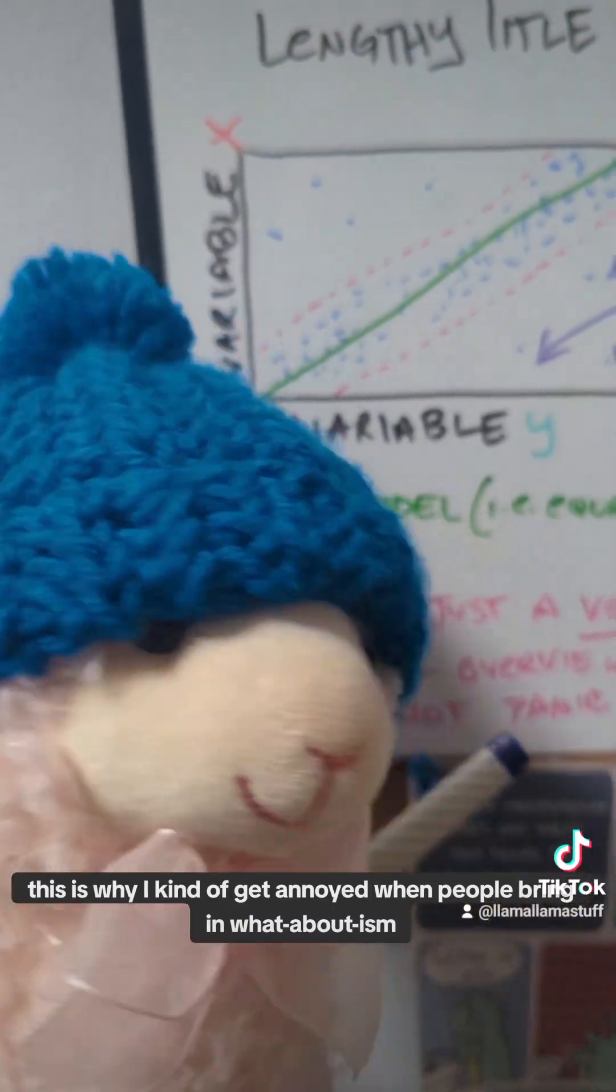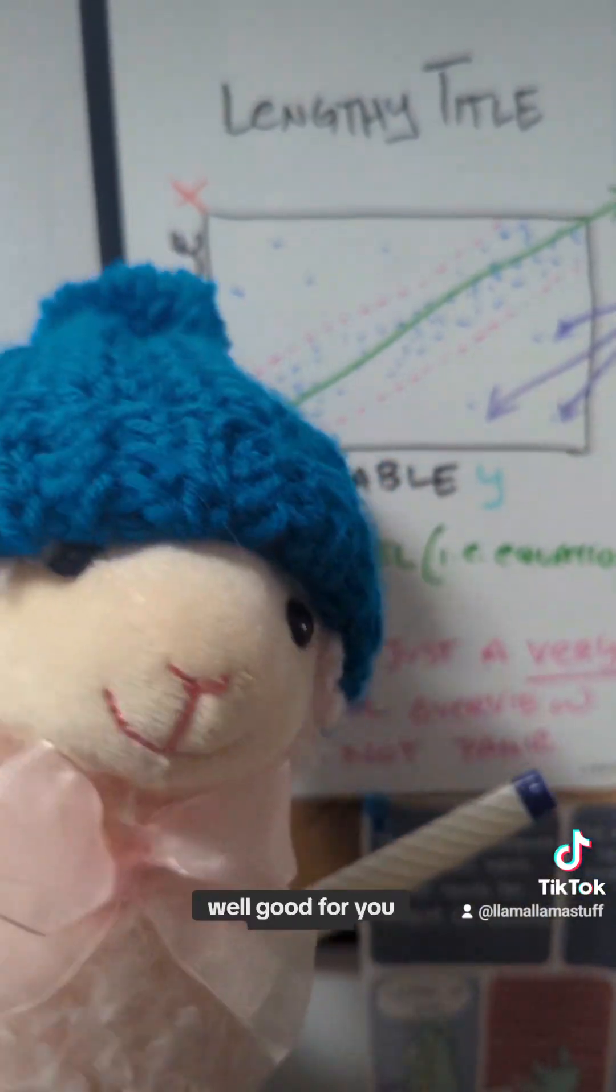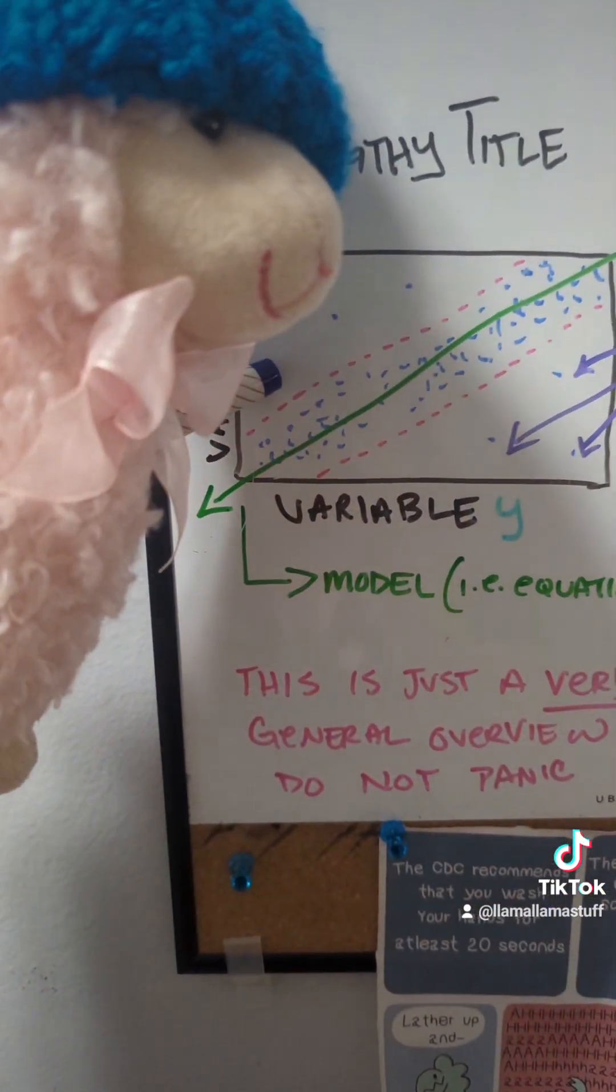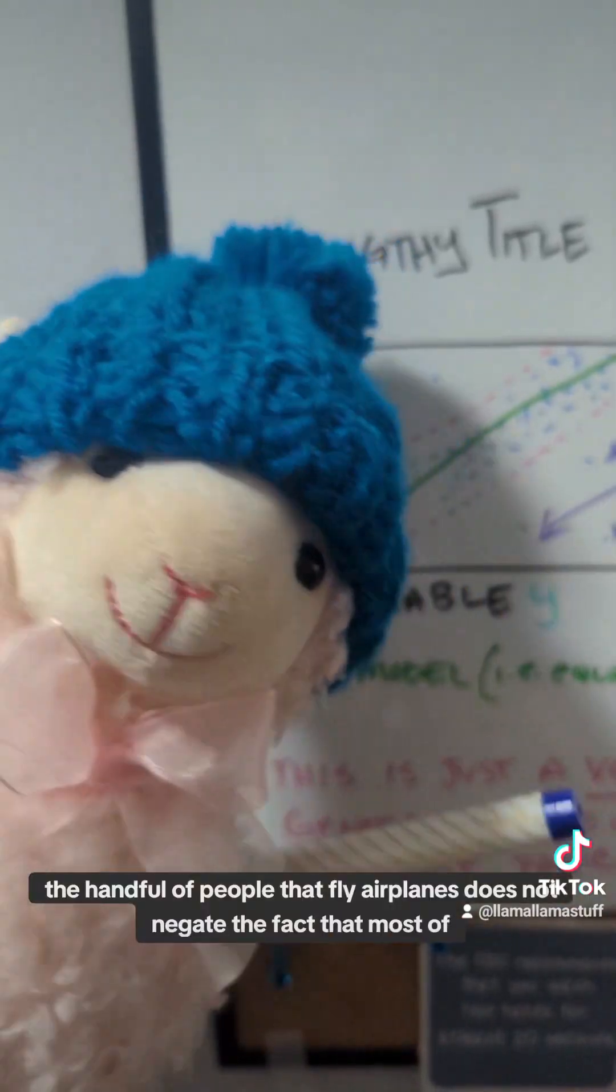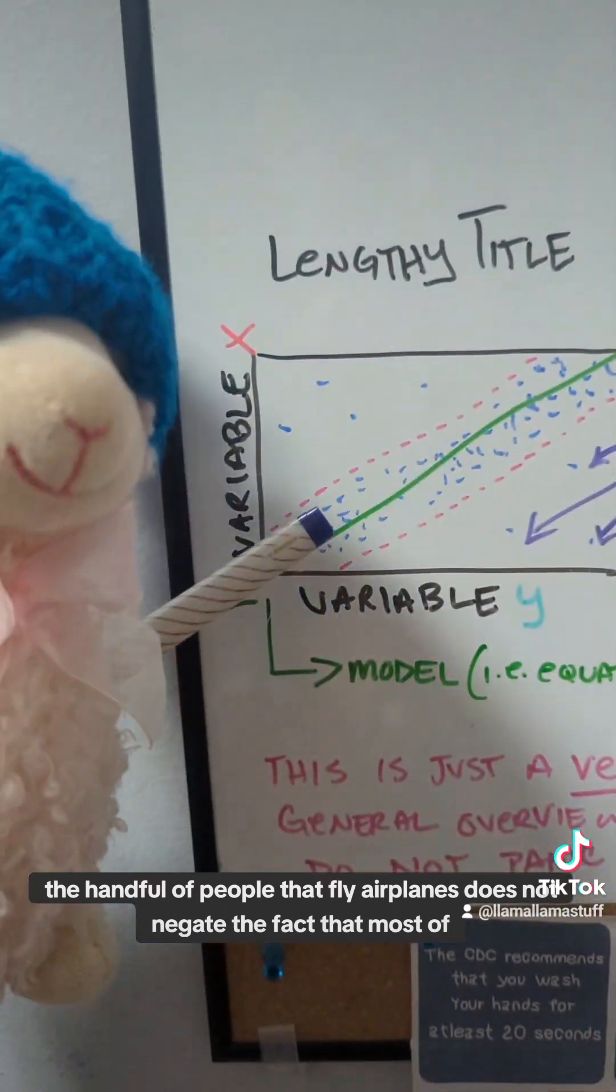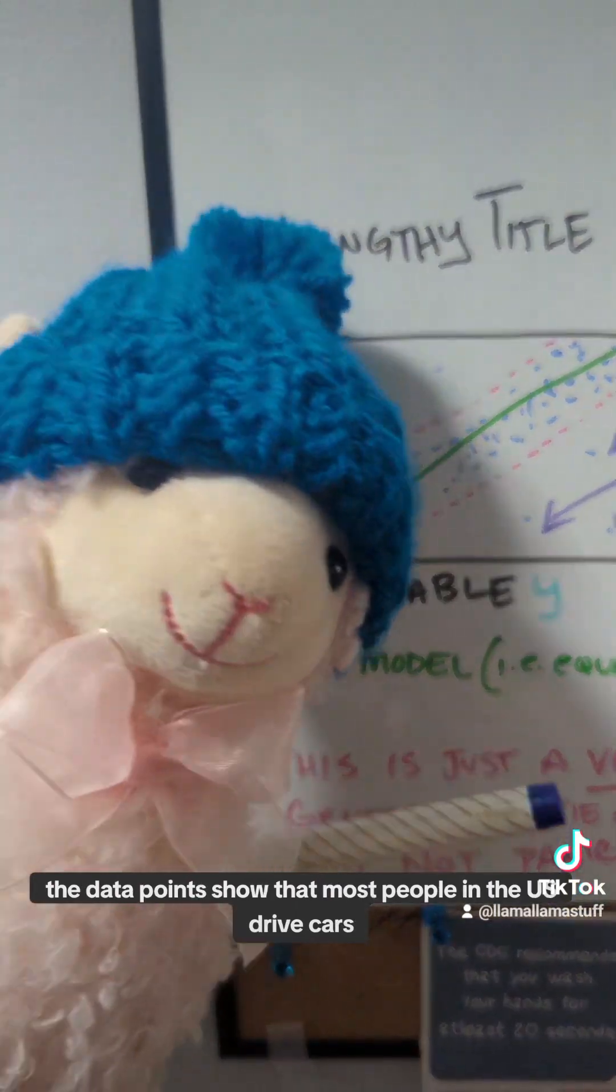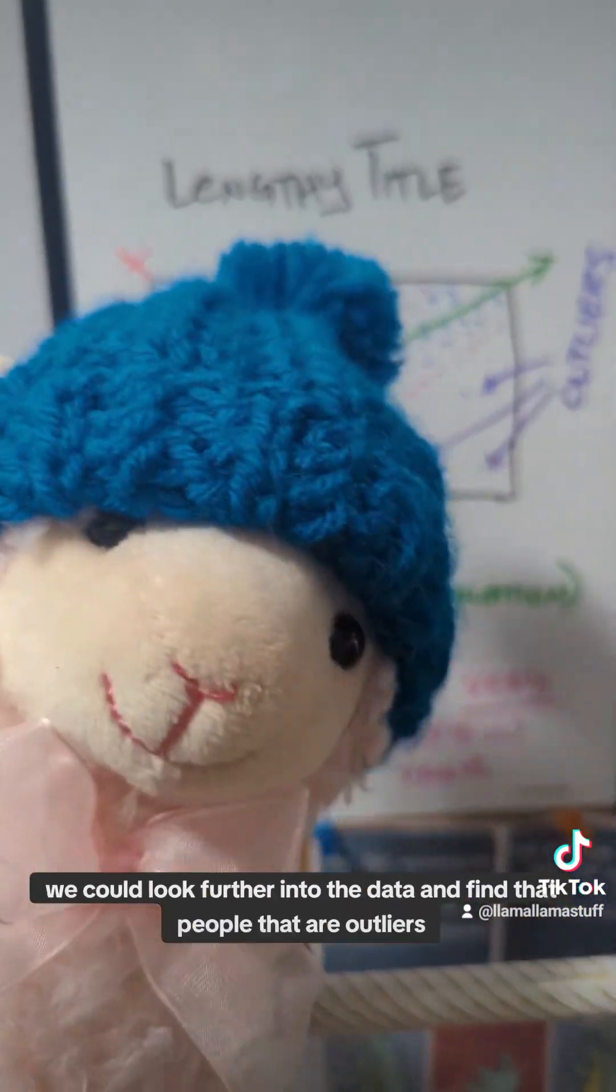This is why I kind of get annoyed when people bring in whataboutism when it comes to statistics. For example, someone will say, well, most people drive cars in the U.S., and inevitably someone will leave a comment that says something like, well, I fly an airplane. Well, good for you, Skippy. You're an outlier.